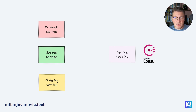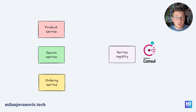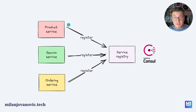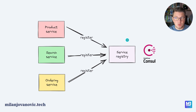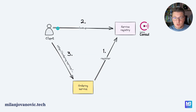Let's go back to our previous example with the product service, search service, and ordering service. Now we introduce another component into our system, which is the service registry — and let's say the actual service we are running is HashiCorp Consul. What's going to happen is that when we start our services, they are going to register their physical address with the service registry, which is our Consul instance. This also changes how the overall flow of sending requests to downstream services looks.